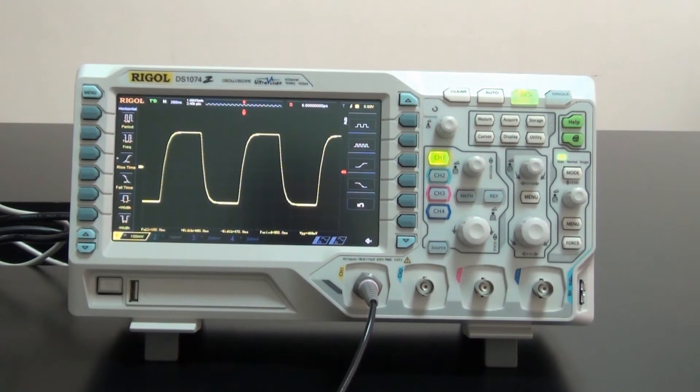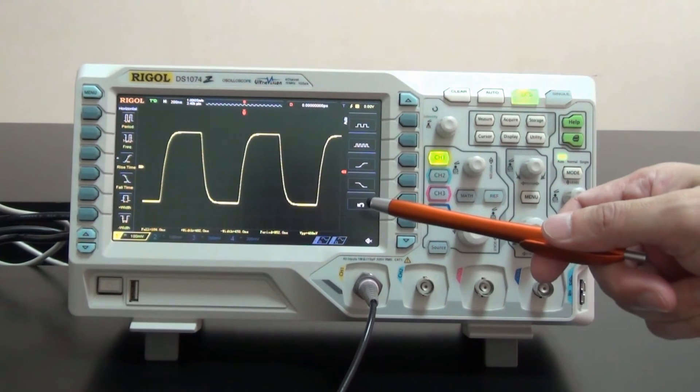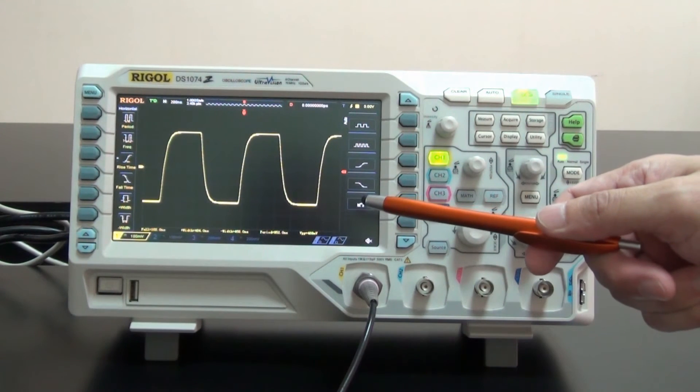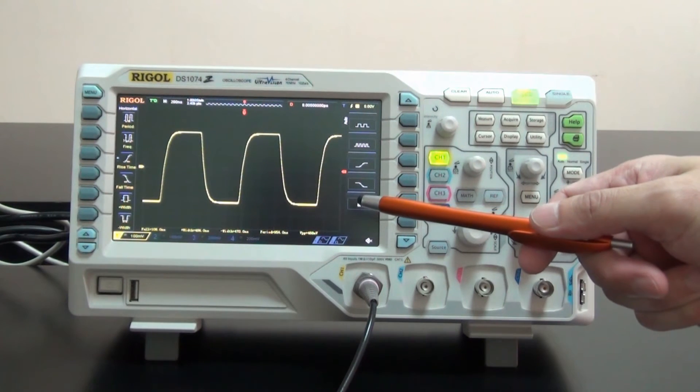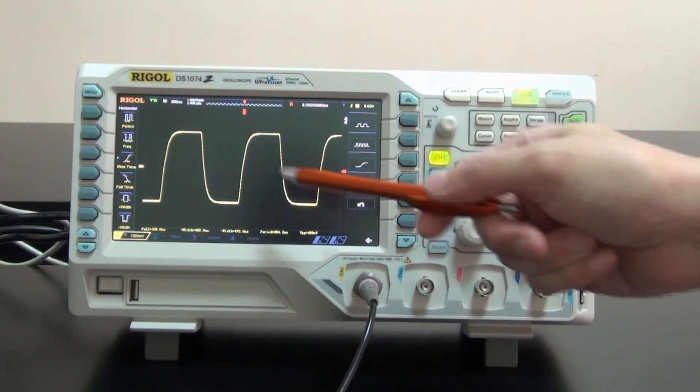Now let's take a look at DS-1000Z. Its waveform update rate is 30,000 waveforms per second. Here we can see only stable signal, but the burst signal is rare to be seen.